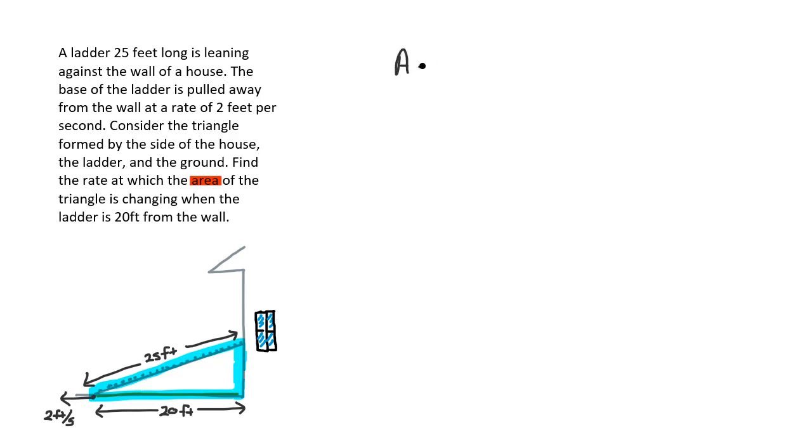The area of a triangle is equal to one half base times height. Now, we can treat this 20 feet as the base, don't know much about the height, but we could find it out because we can use the Pythagorean theorem because we know about the other two sides. So, we know that 20 squared plus height squared would be equal to 25 squared.